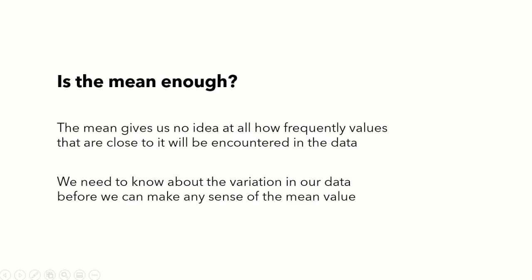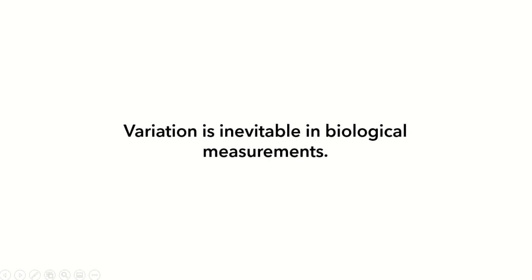What I'm trying to point out is that although data sets have the same average, they can still be entirely different. This is why, although measures of central tendency are good tools to describe your data, more often they are not adequate — they don't give us any idea how frequently values close to the mean will be encountered. To give a better description, one needs to know the extent of variability or dispersion of data points to make sense of the mean value. We'll use the words variability and dispersion interchangeably in this lecture.